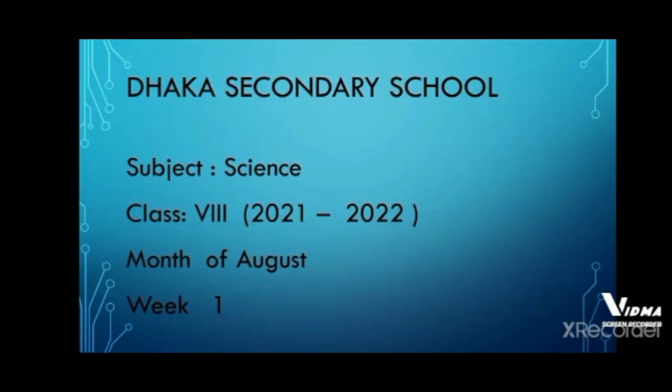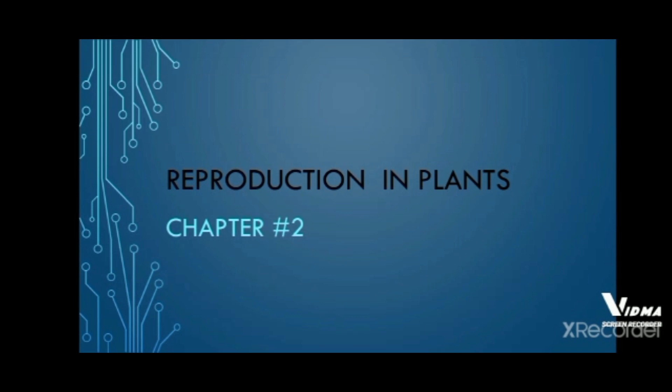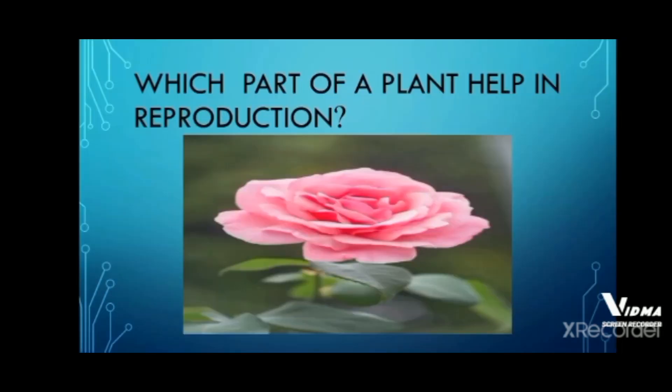Assalamu alaikum students, today I am going to explain the science new chapter. We have a new chapter that is Reproduction in Plants — chapter number two of your book. There are different parts of a plant such as flowers, leaves, and roots, which have different functions. In this chapter we are going to talk about reproduction in plants.